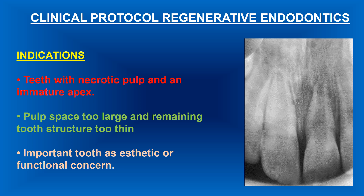Regarding the clinical protocol for regenerative endodontics: first, the indications are teeth with necrotic pulp and immature apices. These are particularly indicated for regenerative endodontics when the pulp space is too large and the remaining tooth structure is too thin for any restoration, so we need to regenerate and lengthen the root so it will be strong enough for restoration in the future.